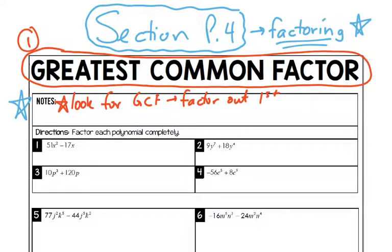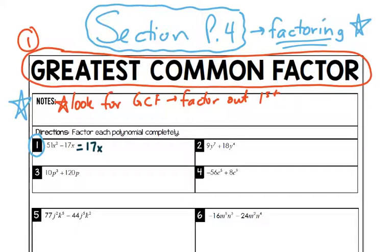Let's try number one — factor this completely. First step: look for a GCF. Is there something that goes into both terms, the 51x² and the 17x, that I can factor out? Let's look at numbers first — between 17 and 51. I'll tell you right now that 17 does go into both of them, so I know I can pull out a 17. One term has an x² and the other has an x, so I can only take one x out total from both of them — I can't take out two because the second term only has one x.